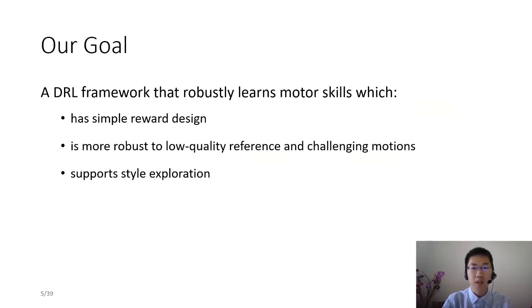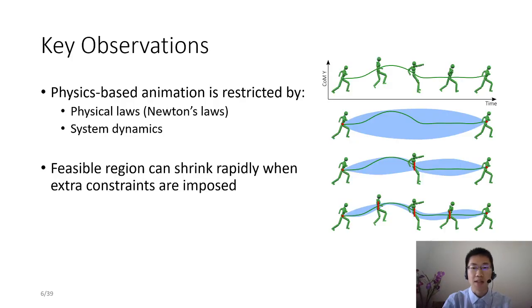We want to develop a deep reinforcement learning framework that enables physics-based characters to learn and explore motor skills from reference motions, which requires simple reward design, is more robust to low quality reference and challenging motions, and supports style exploration when combined with stylized rewards.